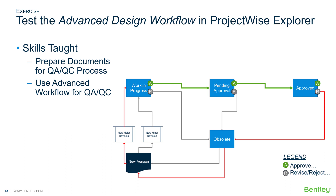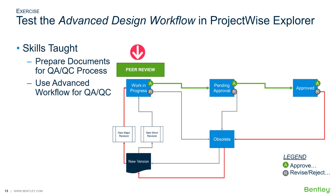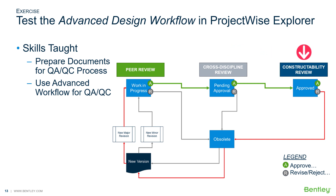Recall the conceptual workflow process diagram. There are three checkpoints in the QA/QC process: work in progress, pending approval, and approved. The project team has agreed that the peer review will occur during the work in progress state, a cross-discipline review will occur during the pending approval state, and a final constructability review will be done once the design is approved.